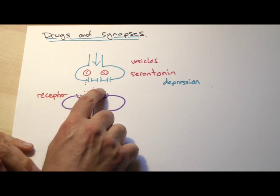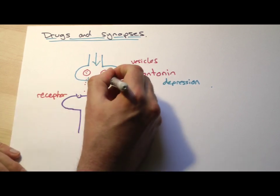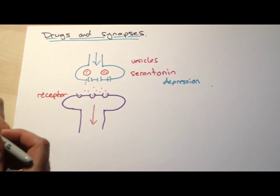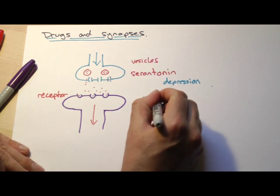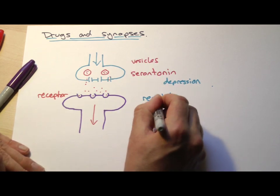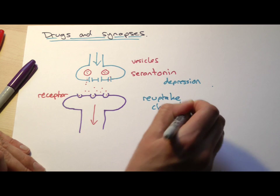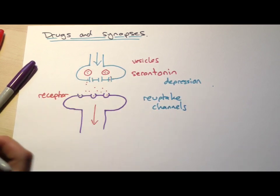Now, what would normally happen is that the serotonin would be taken back up through these little channels here, called reuptake channels. So reuptake channels. They'd go back in and they'd be recycled and used again.